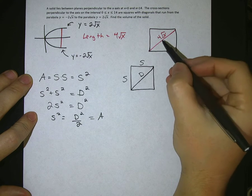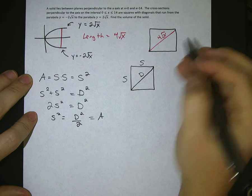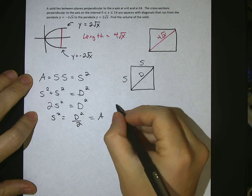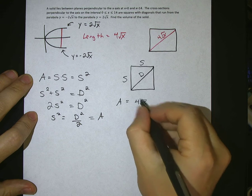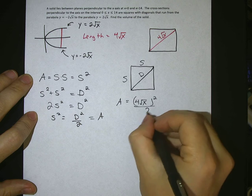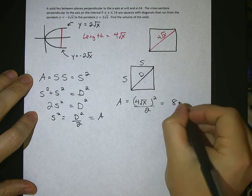We also know the diagonal from up here is 4 square roots of x. So the area in terms of the diagonal is 4 square roots of x squared over 2, which is 8x.